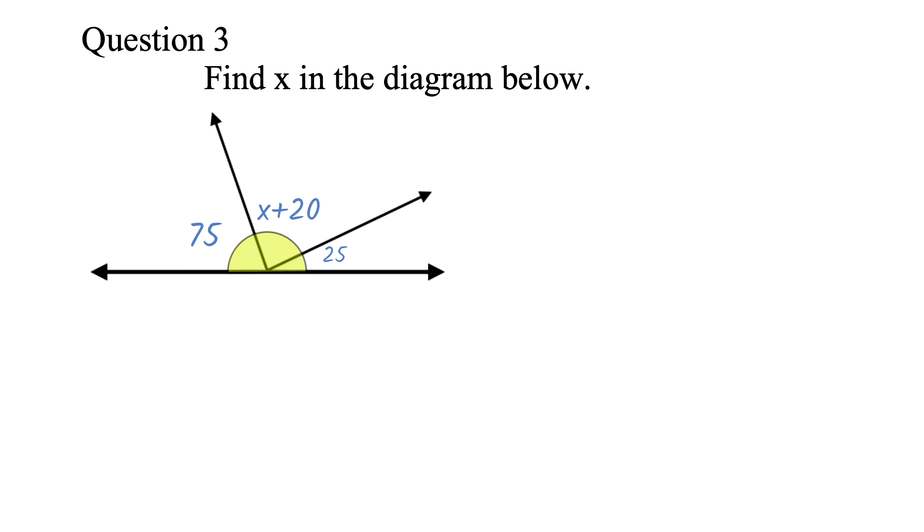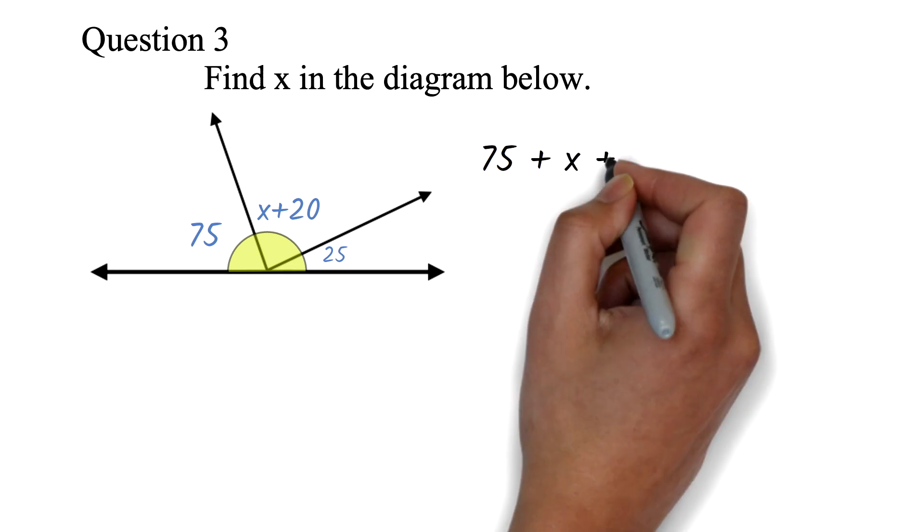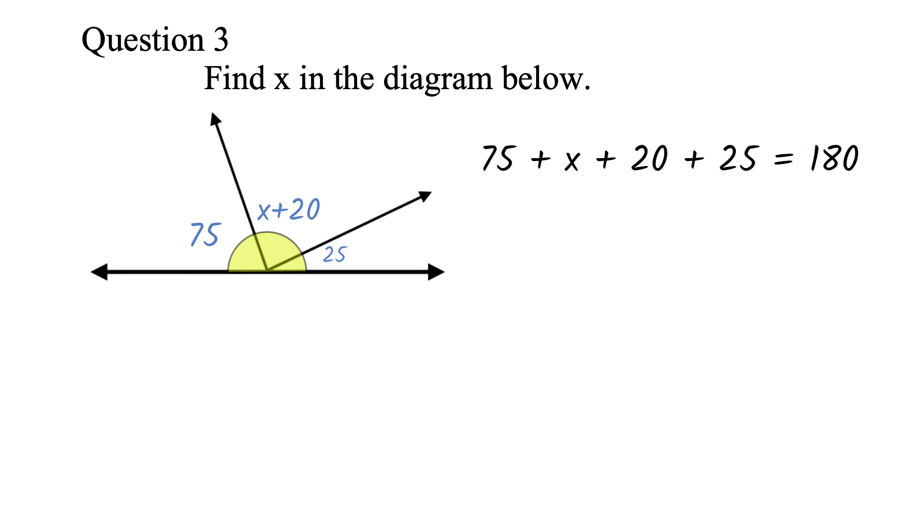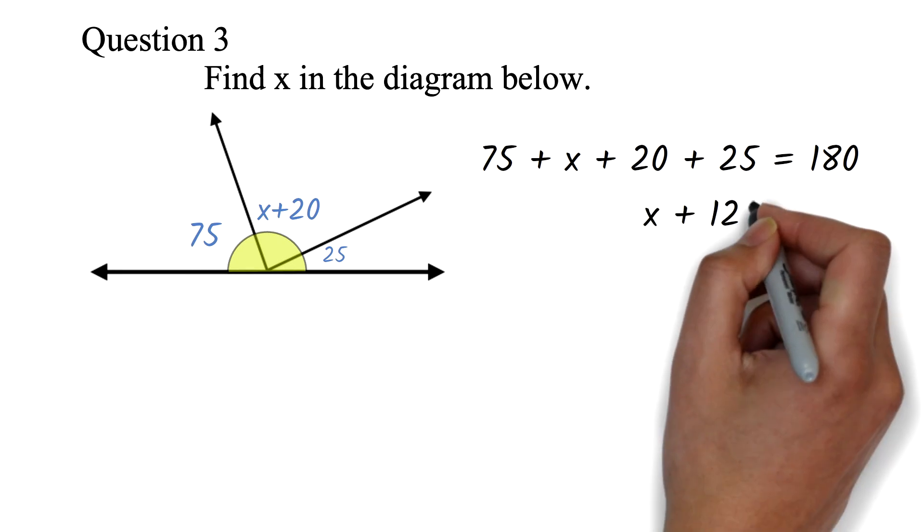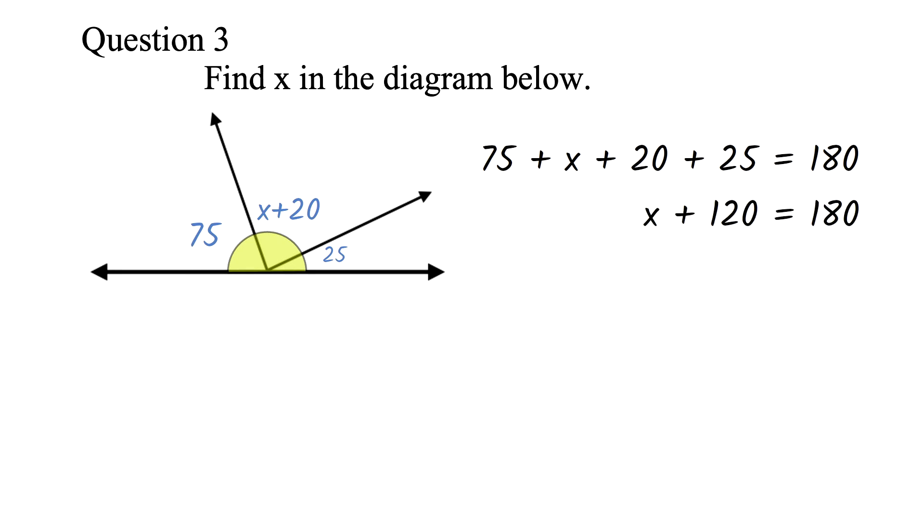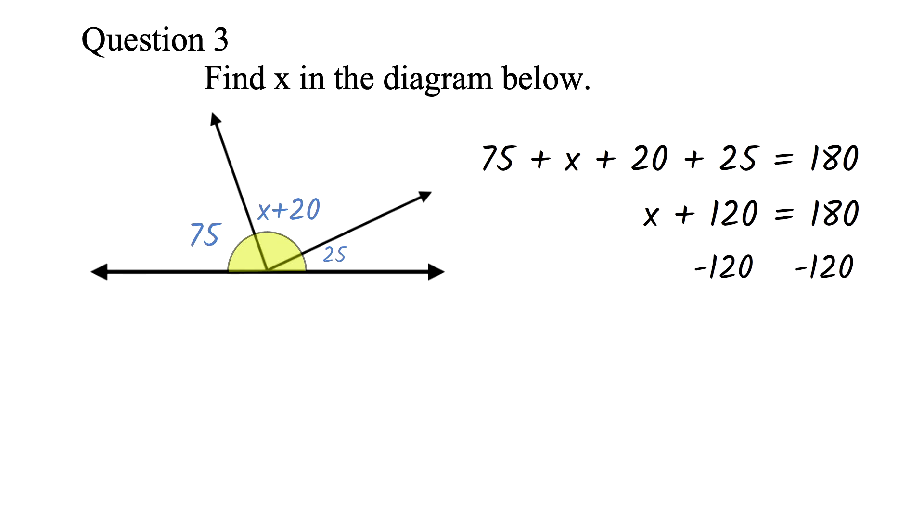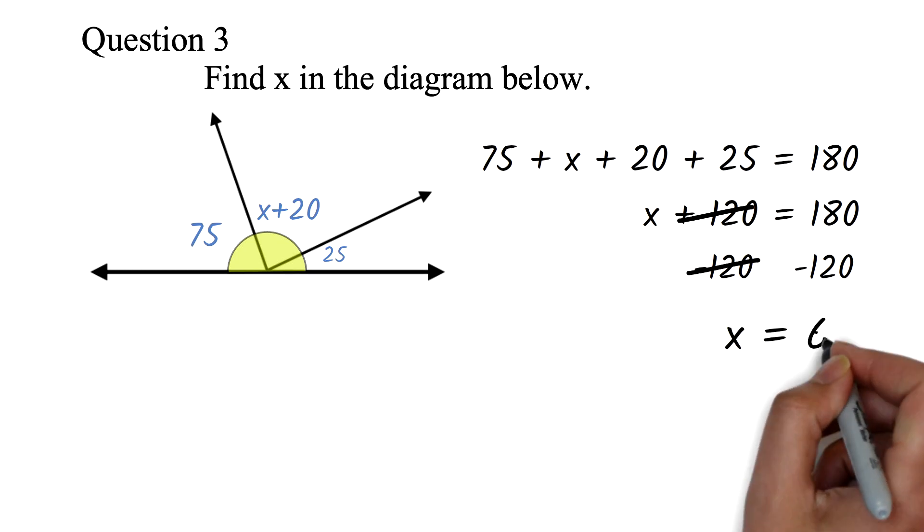So here, we will add 75 plus x plus 20 plus 25 equals 180. We can add the numbers 75 plus 20 plus 25 to get 120. So we have x plus 120 equals 180. We can subtract 120 from both sides. The 120 will cancel out. 180 minus 120 is 60. So x is 60.